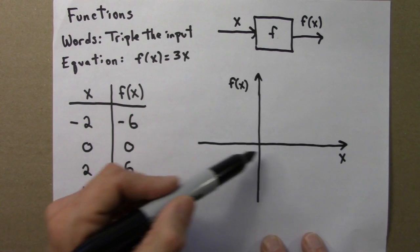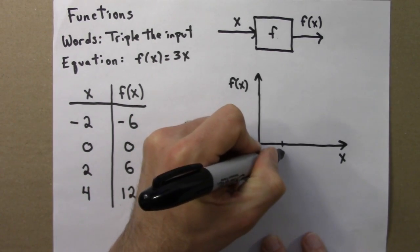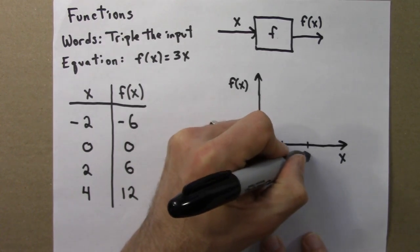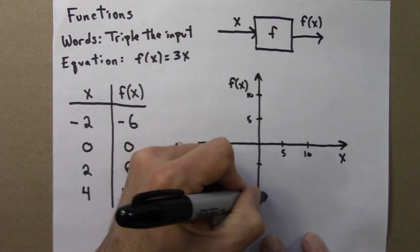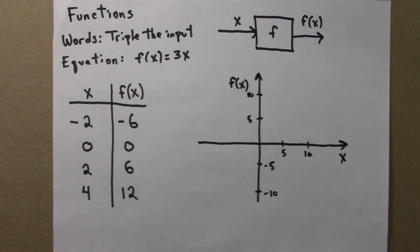And the inputs are down here on the horizontal axis. And then let me put on a scale. There are my axes. And now I can plot some points. Maybe I'll plot these points in a different color so they stand out.